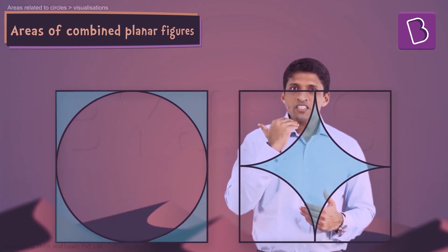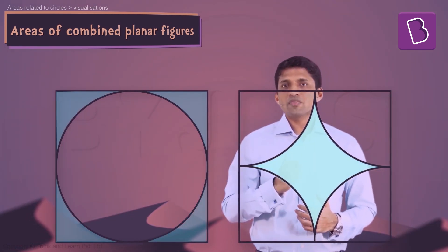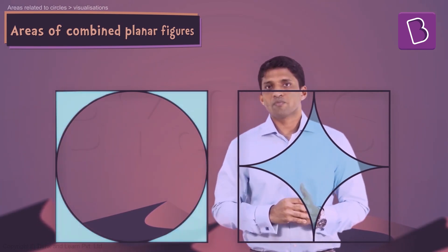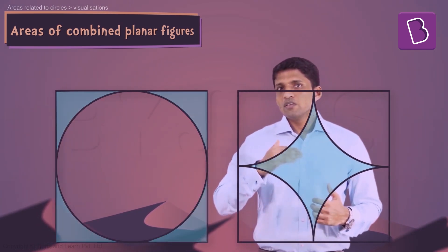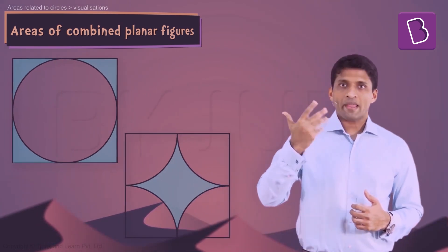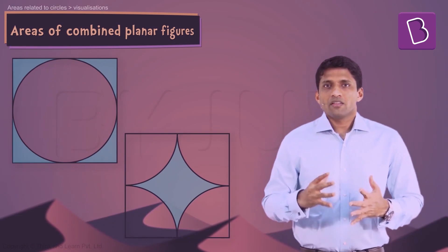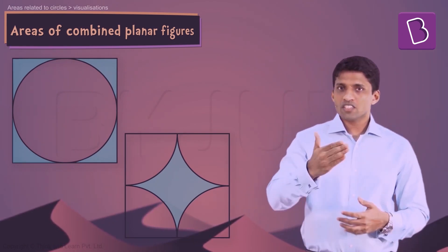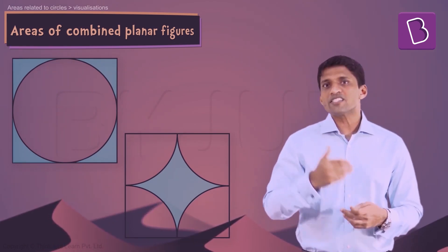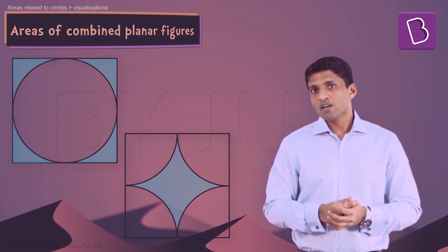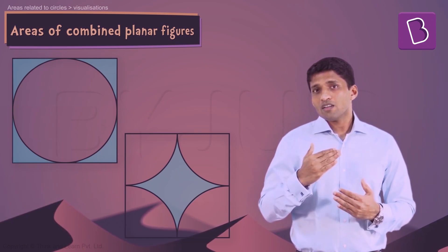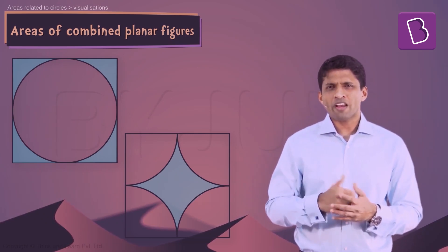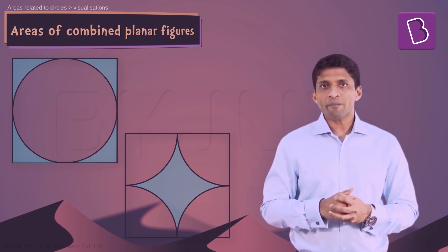The shaded region in the first diagram is the same as the shaded region in the second diagram. My question is: why? Take some time and try answering this. There is a very interesting and simple way to answer it.